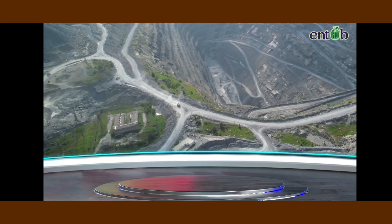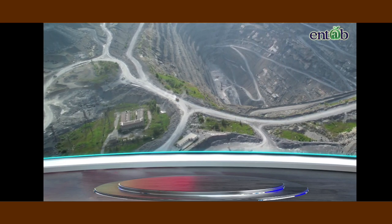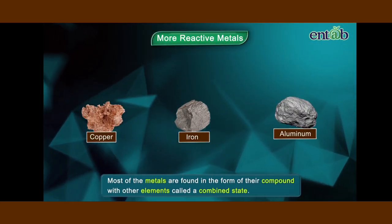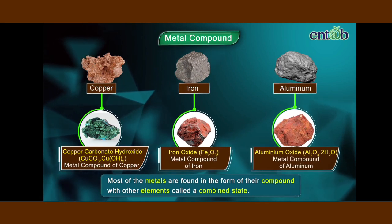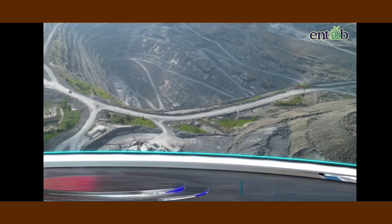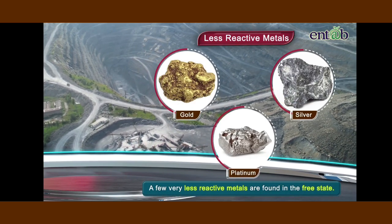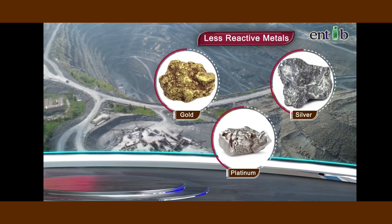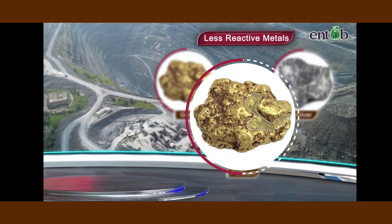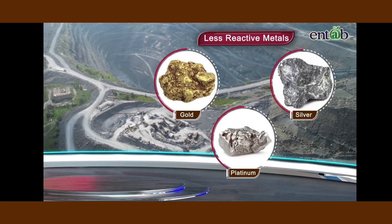Most metals, being reactive, do not occur in the free state in nature. So most of the metals are found in the form of their compounds with other elements, called the combined state. Only a few very less reactive metals are found in a free state. But even in this free state, there could be impurities present with the metal, and hence they have to be purified or refined.